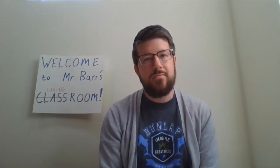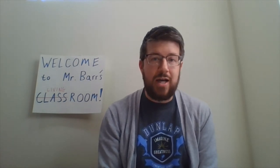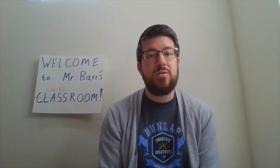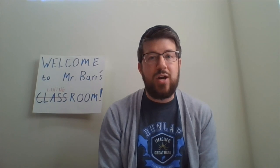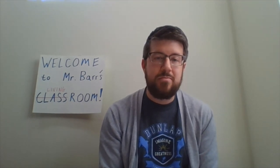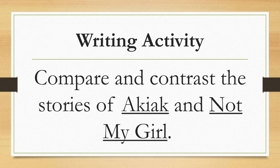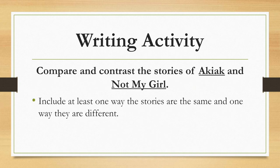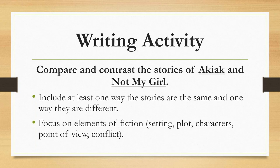Now it's time for our writing activity. Today we're going to work on comparing and contrasting the book we read last week, Akiak, with the book we read this week, Not My Girl. Comparing is when you find two things that are similar about the two texts, and contrasting is when you find things that are different. Your assignment is to compare and contrast the stories of Akiak and Not My Girl. It's important to include at least one way the stories are the same and one way that they are different. A great strategy is to focus on the elements of fiction we've discussed: setting, plot, characters, point of view, and conflict. Remember to indent, use the best grammar and spelling you can, and make sure you re-read what you wrote to make sure your writing makes sense.